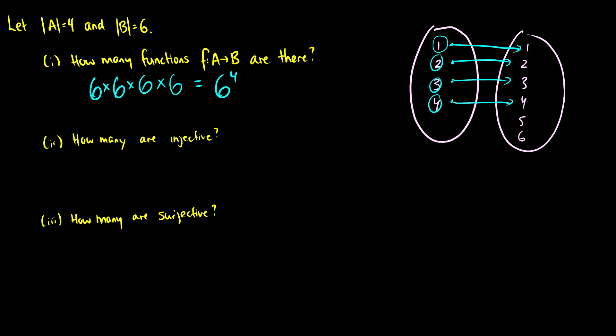We can also think of this as the cardinality of B raised to the cardinality of A, and this is a general result. So we have the cardinality of B number of options for each element in A, and we have the cardinality of A number of elements we have to do this for.